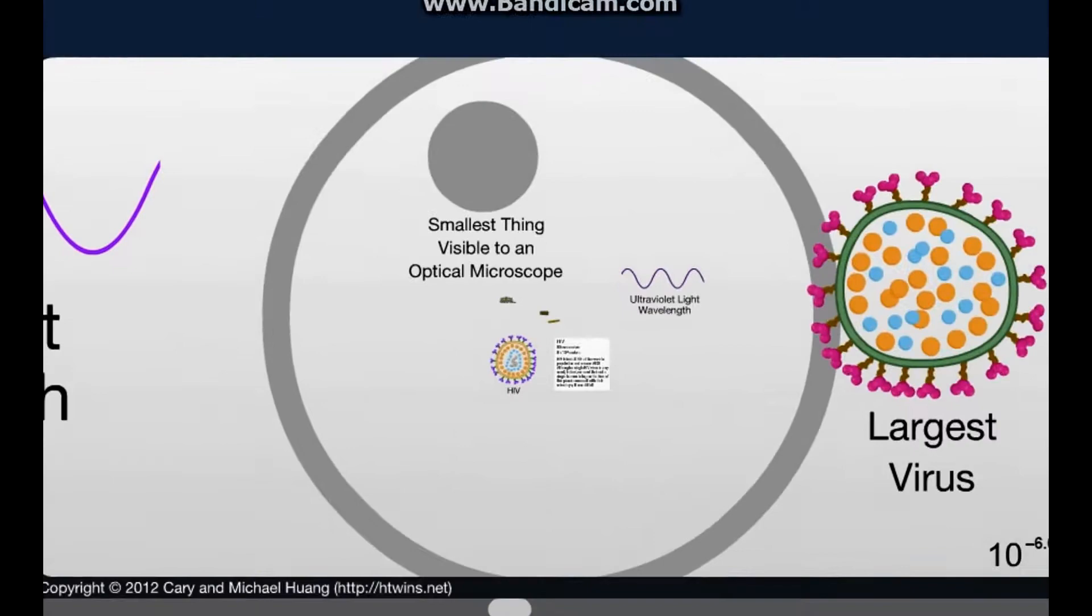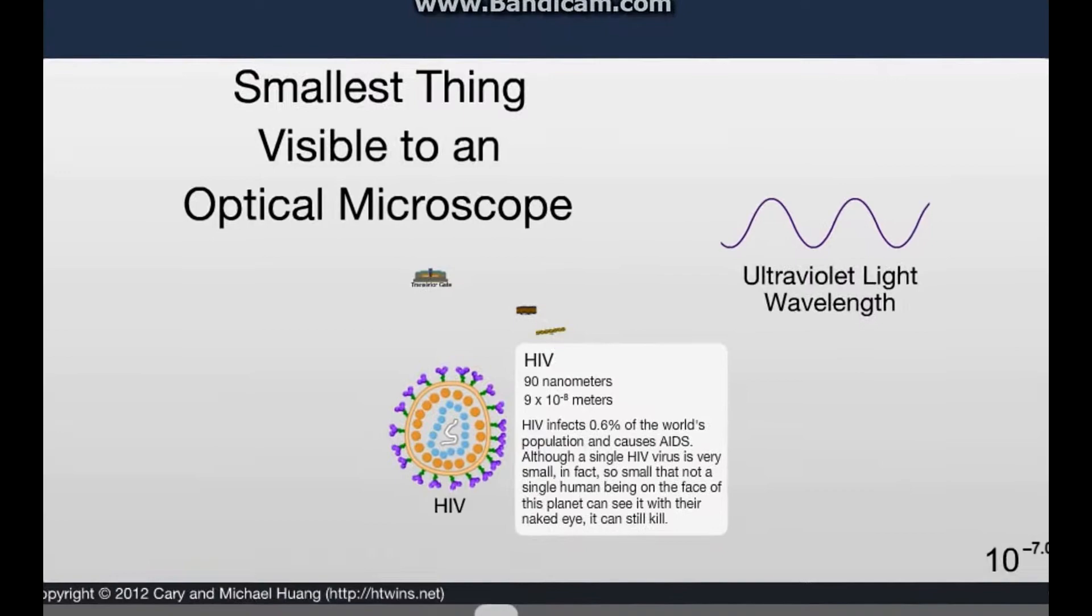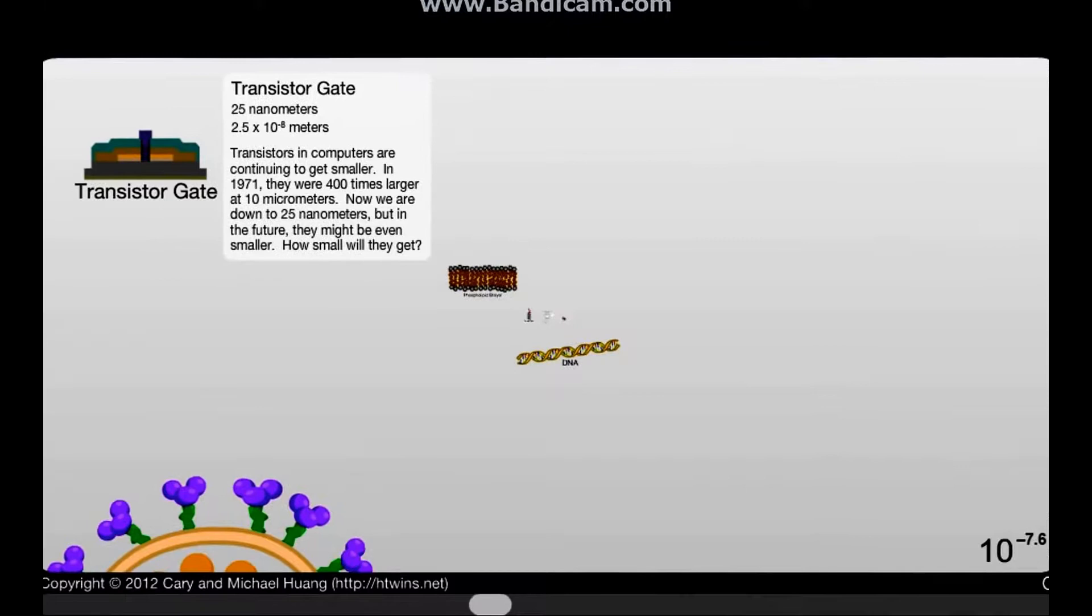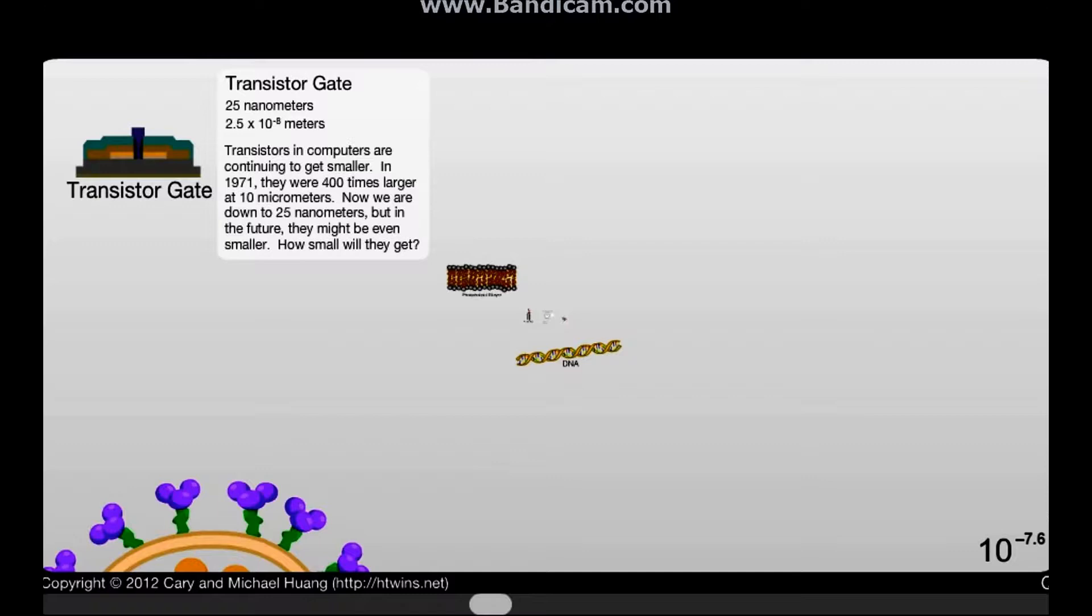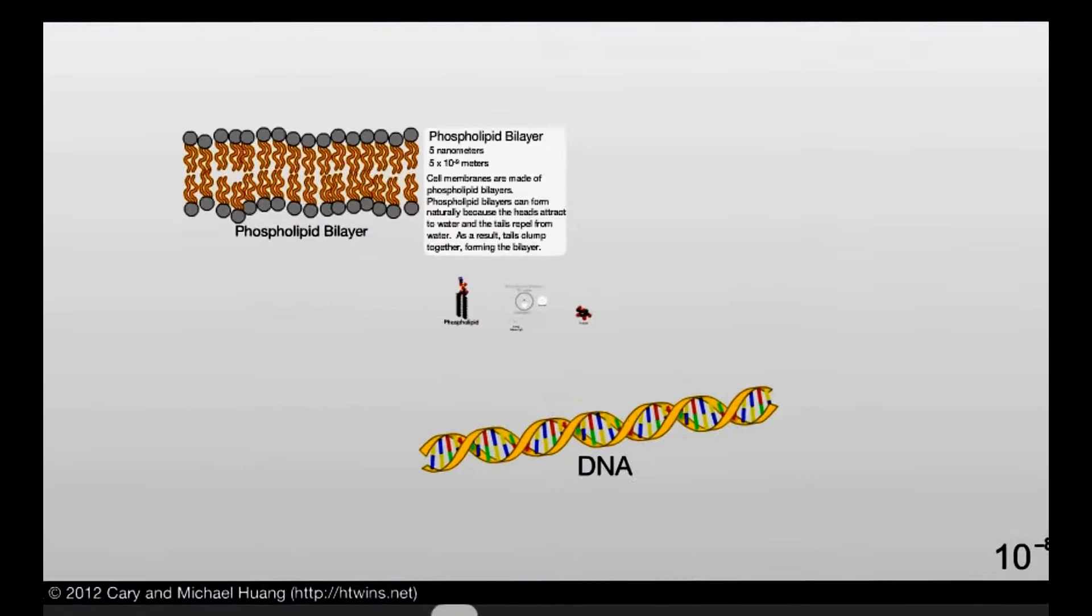So let's go down here. What's this? HIV? That one thing you never, ever, ever want to get? What's this? Transistor gate? Really? Wow. That is amazing. That's in our computer right now. And it's smaller than the HIV virus. And we still can't cure that. Are you serious?